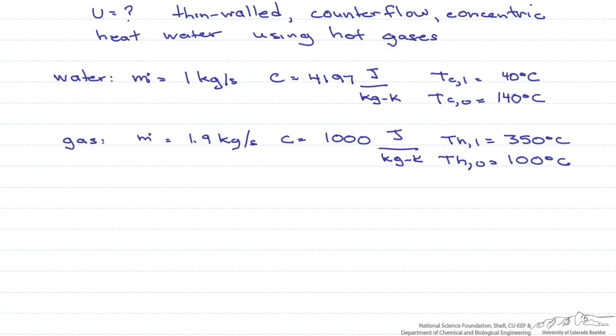It is going to heat pressurized water using hot gases. The water comes in at a mass flow rate of 1 kg per second. Its heat capacity is 4,197 joules per kg K. It comes in at 40 degrees C and exits at 140 degrees C.